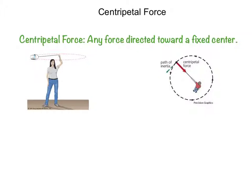Any force directed toward a fixed center is called a centripetal force. Centripetal means center seeking or toward the center. So if you whirl an object around on a string, you have to keep pulling on that string, exerting that centripetal force. The string transmits the centripetal force, which pulls the can into a circular path. So any force that results in a circular motion is a centripetal force.